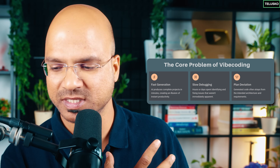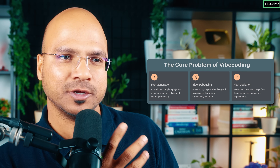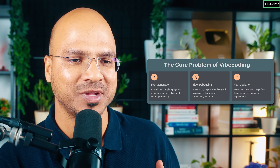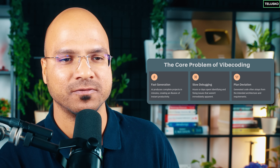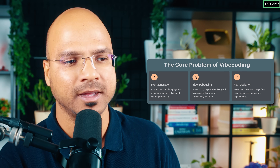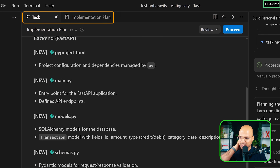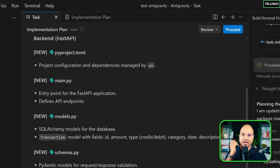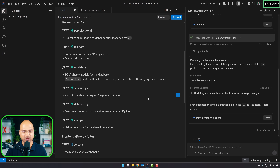One of the problems with vibe coding is that when you build a project, it gives you the project but it takes a lot of time to debug, and it might not follow the plan. But with this planning mode, when you see the plan and the tasks, you can actually select a task and add comments — specifying what you want to modify.